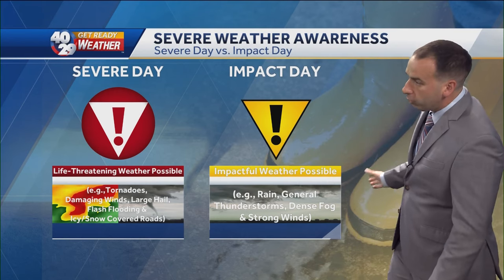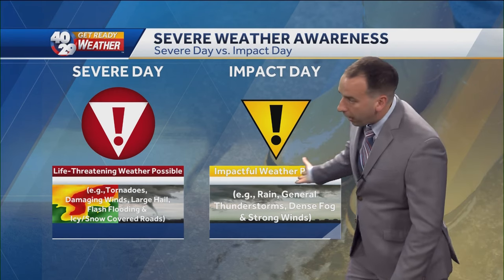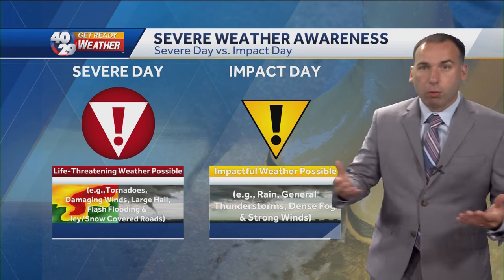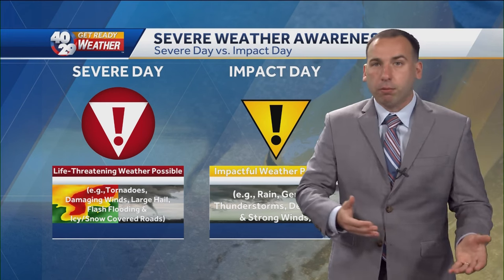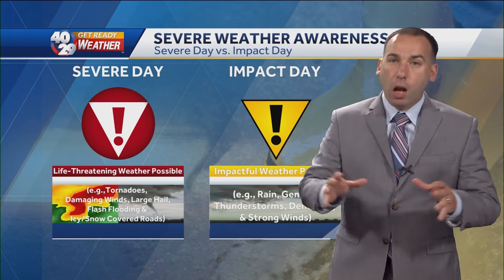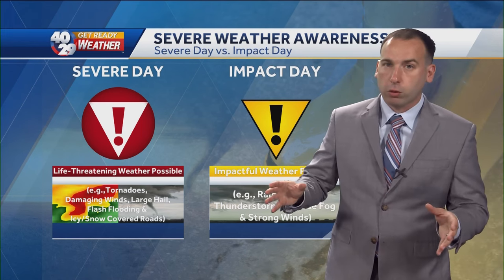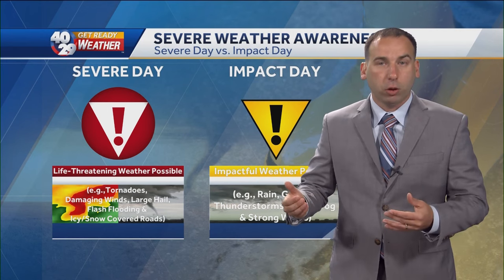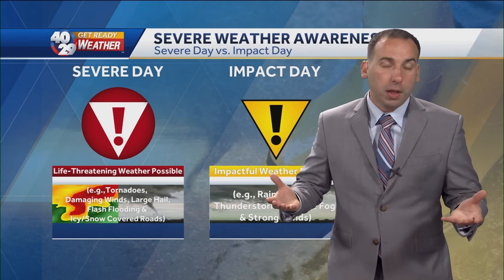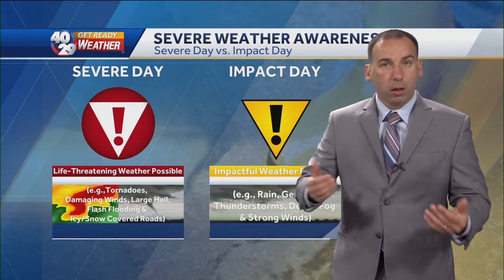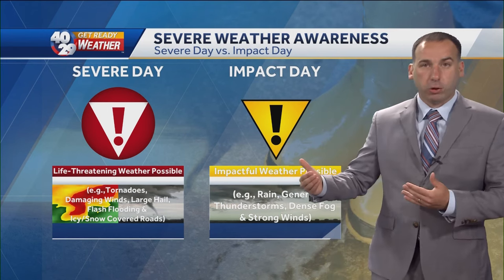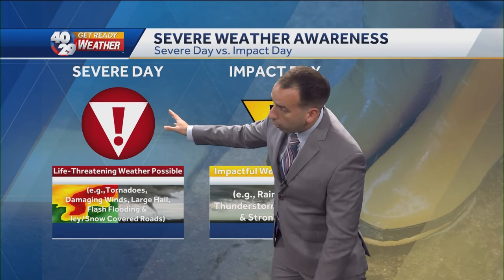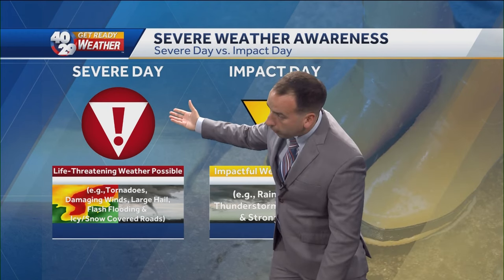Impact days are issued when impactful weather is possible. For example, rain, thunderstorms, non-severe thunderstorms, wind — those are some examples in which we would issue an impact day. The other classification that we use for impactful weather is severe days.